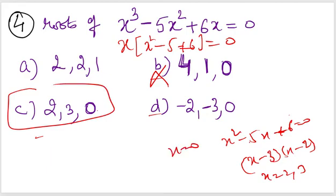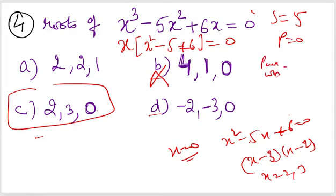Alternatively, using the relations: sum = +5, product = 0, and the pairwise product sum equals c by a = 6. Since the product is zero, look for the option where one root is zero. The pairwise product sum is 2×3 + 3×0 + 0×2 = 6, which matches the coefficient of x. So this confirms the answer is the option with roots 0, 2, and 3.